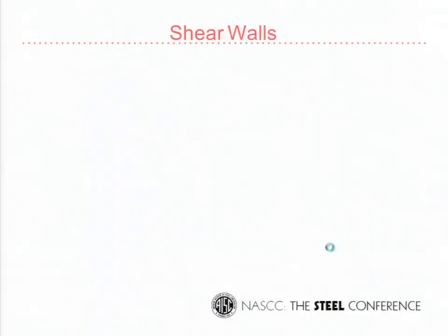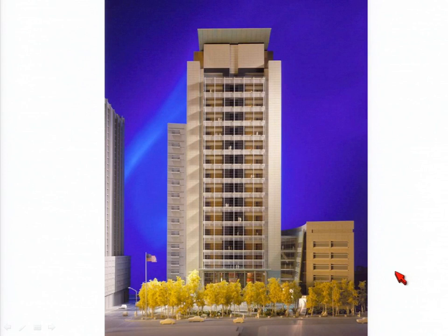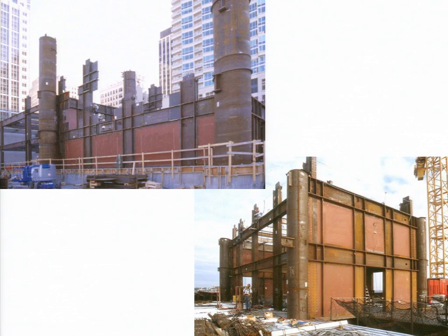Steel plate shear walls have been done on the West Coast starting around the early 2000s after testing at Berkeley. Here's a federal courthouse — this type of system typically gets used on high-rise office or courthouse buildings. They love the robustness of a steel plate shear wall; it gives them flexibility in the plan for courtrooms. It's in the spec now and it's pretty easy to go through the process.